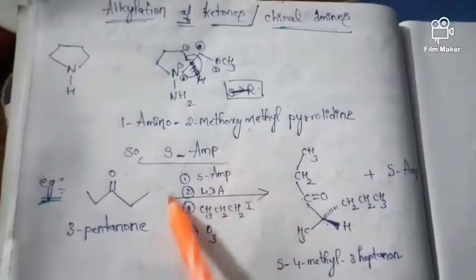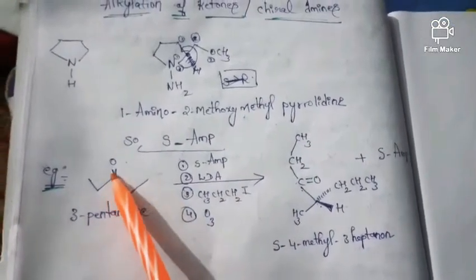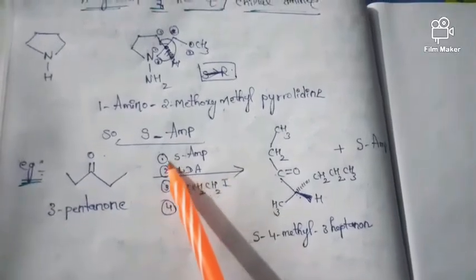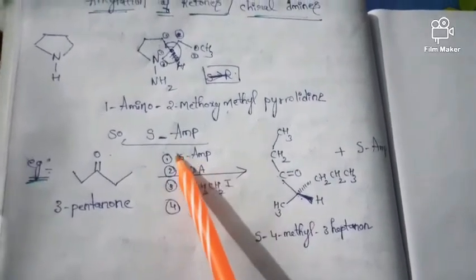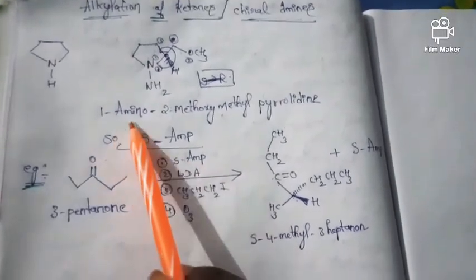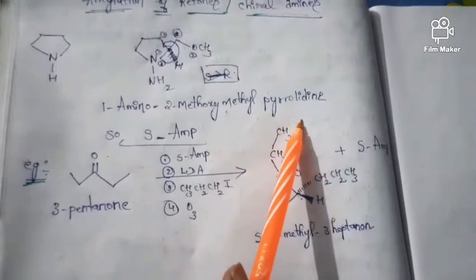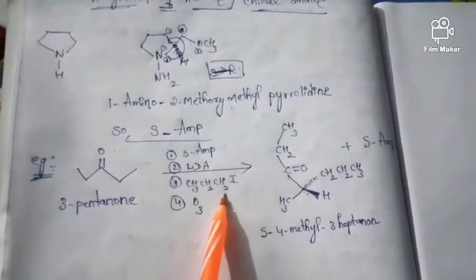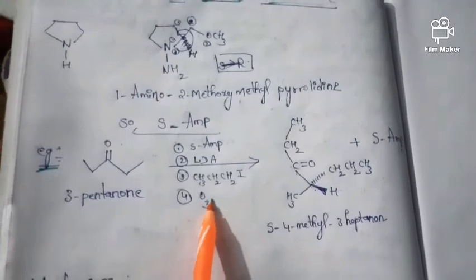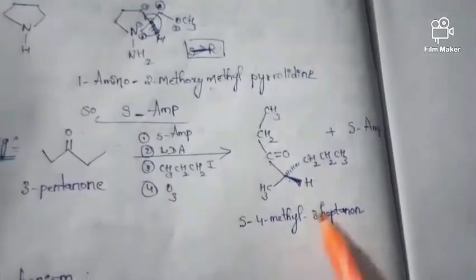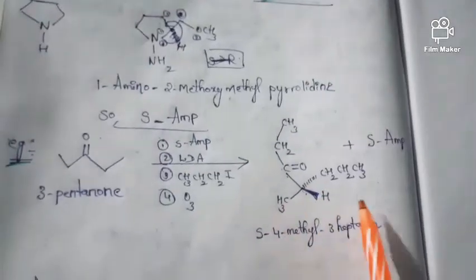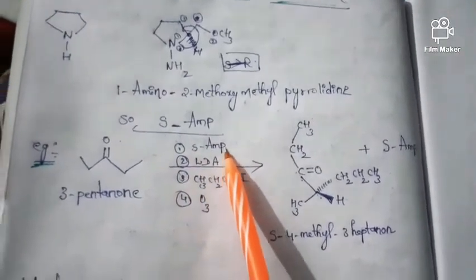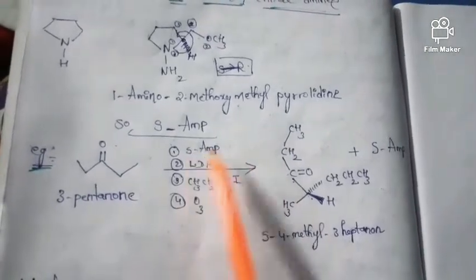Now let us start. Here we have taken a ketone — 3-pentanone. The reagents are: first, SAMP (1-amino-2-methoxymethyl-pyrrolidine); next, LDA (lithium diisopropyl amide); then propyl iodide; and finally O₃ (ozonolysis). Here we will get the product. One important thing to observe: we have used SAMP, and in the final product also, we will get SAMP back.